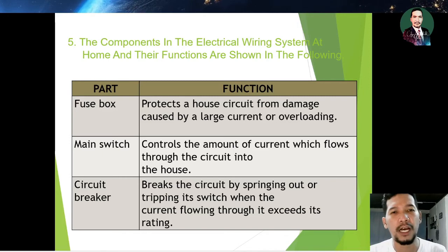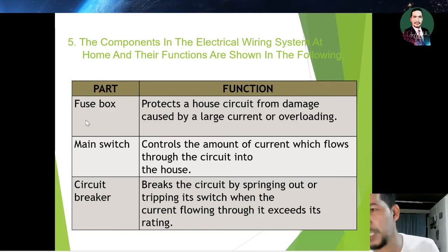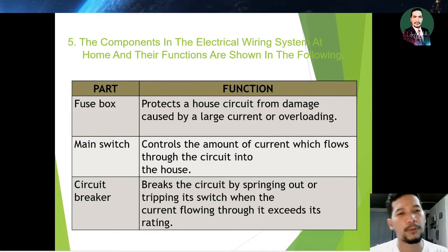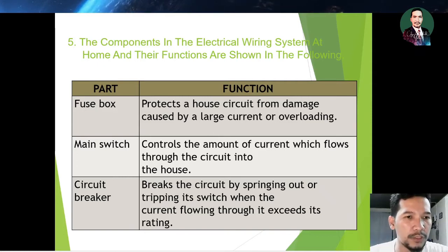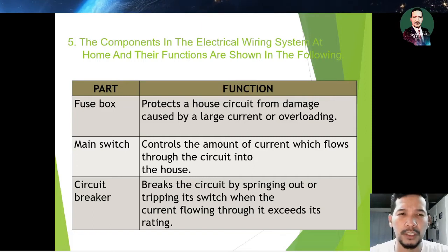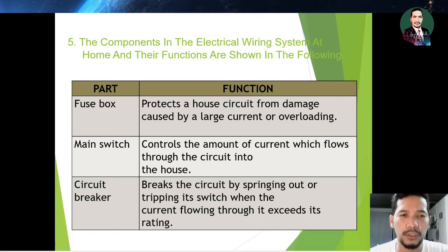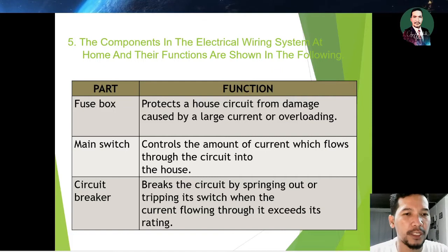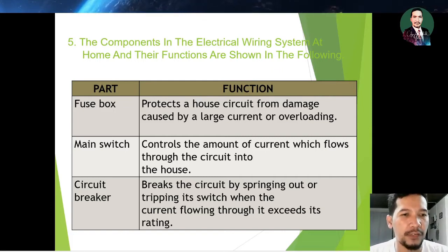The components of the electrical wiring system at home and their functions are as follows. The fuse box protects the house circuit from damage caused by large current or overloading. The main switch controls the amount of current which flows through the circuit into the house. The circuit breaker breaks the circuit by tripping its switch when the current flowing through it exceeds its rated value.